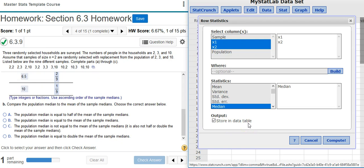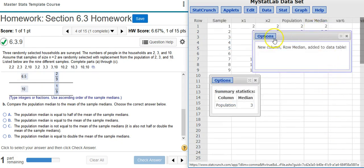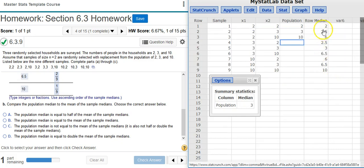This will actually put the output not in a Results window, but in the data table, and that's where we want it. I press Compute, and now my median values are there in the data table itself.